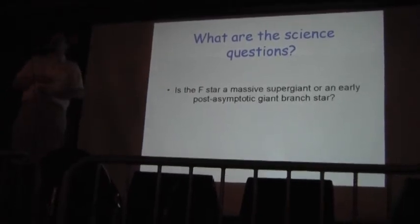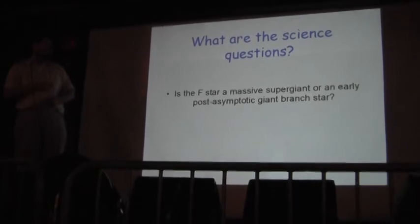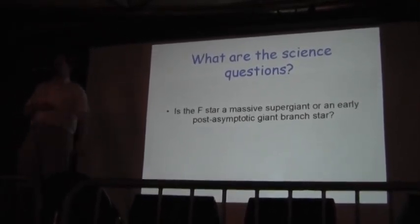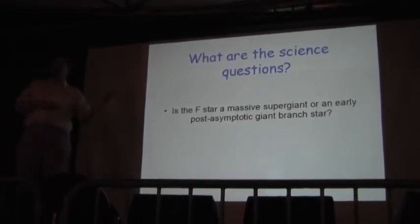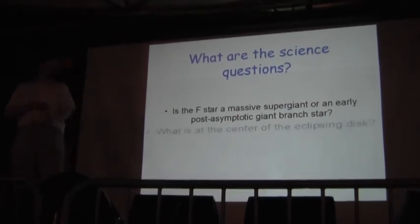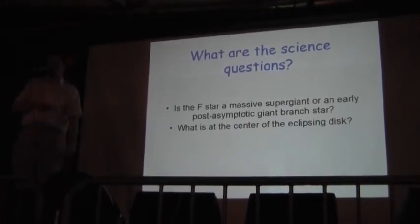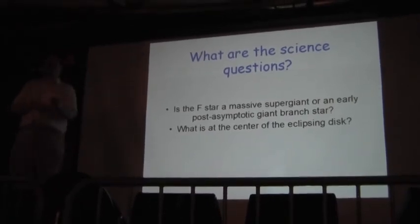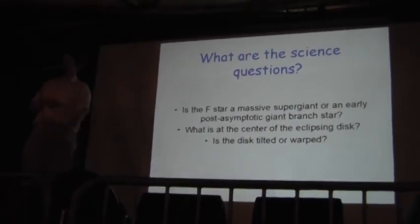Okay, so what are the science questions we're trying to answer? First, is the F-star really a massive supergiant or an early post-asymptotic giant branch star? Most of you probably don't even care about that. You're probably after the donut. What's at the center of the donut? Is the disc tilted or warped? Like, if you still play vinyl, you know what a warp record looks like? We think there's a warp in the disc. We need to prove it.